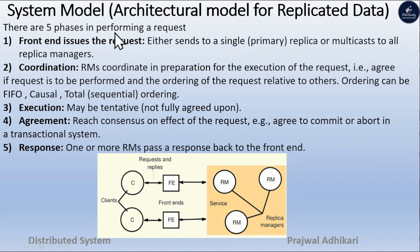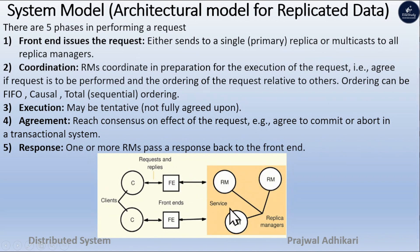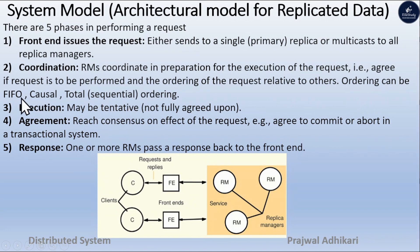There are five phases in performing a request. First, the front end issues the request — either sending to a single replica or multicasting to all replica managers. Second, coordination: replica managers coordinate in preparation for execution of the request, agreeing on whether the request is to be performed and the ordering of the request. Ordering can be FIFO (first in first out), causal, total, or sequential.